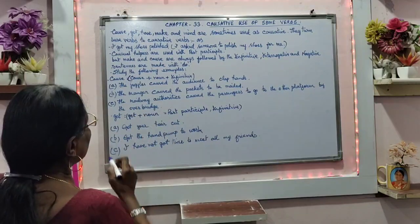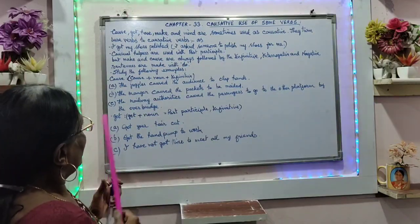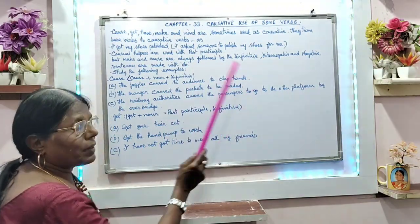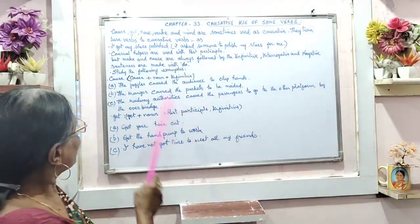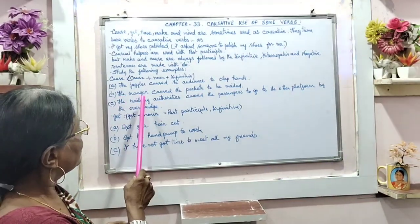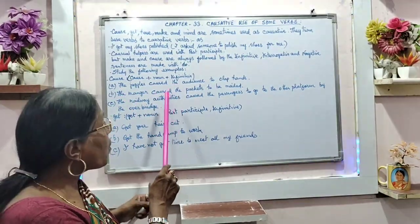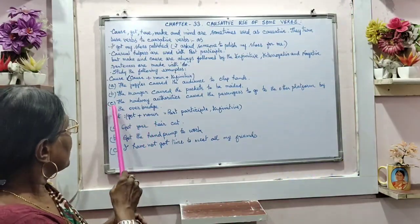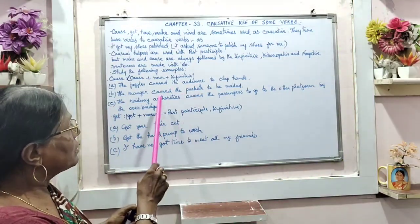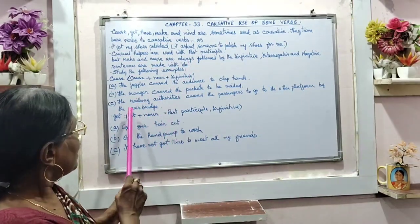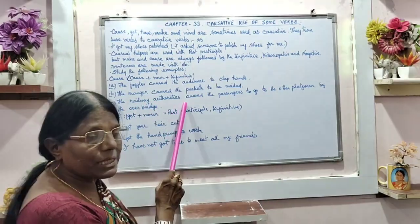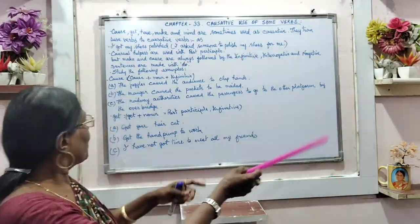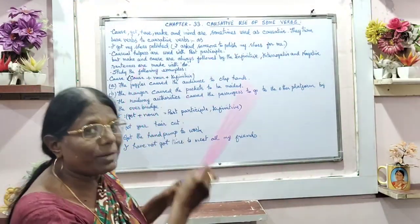Here you see example A. The juggler caused the audience to clap hands. The manager caused the packets to be mailed. These are all causative verbs. The railway authorities caused the passengers to go to the other platform by the overbridge.